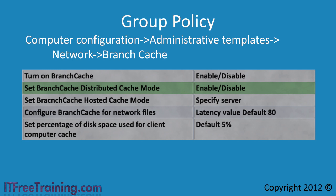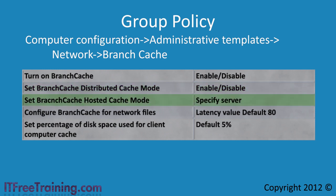If you want to run Branch Cache in distributed mode, you simply need to enable this setting. The next setting, Set Branch Cache Hosted Cache Mode, configures Branch Cache to run in hosted mode. Once you enable this setting, you need to also configure which server Branch Cache will contact to download data.